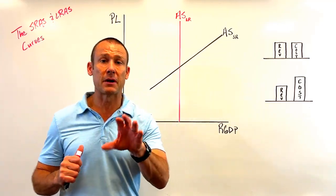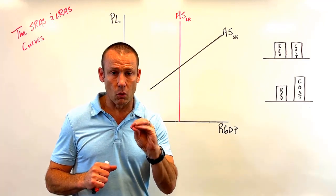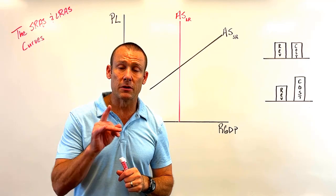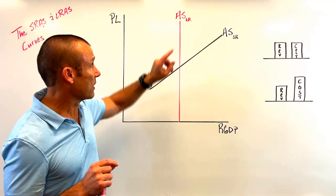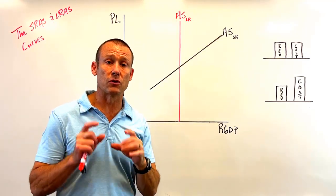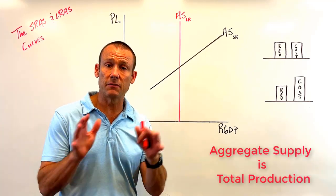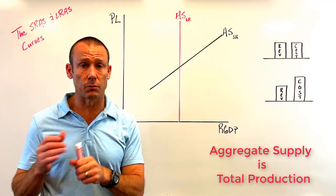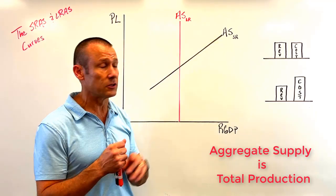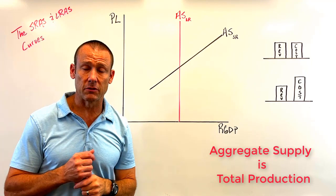Now, let's get more into the definitions. In this video, for aggregate supply I'm often going to use the term total production. A synonym for aggregate supply is basically total production. So we have two total production lines — one has a long run perspective, and one has a short run perspective.